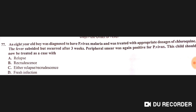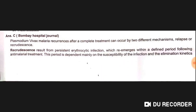An eight-year-old boy was diagnosed with Plasmodium vivax malaria and treated with appropriate doses of chloroquine. The fever subsided but recurred after three weeks; peripheral smear was again positive for P. vivax. The child should now be treated as a case of either relapse or recrudescence.